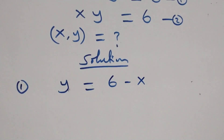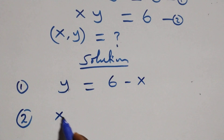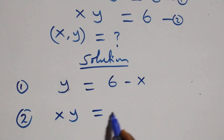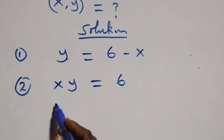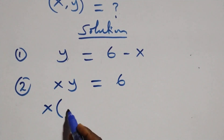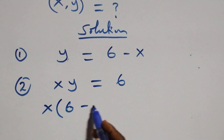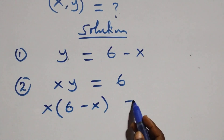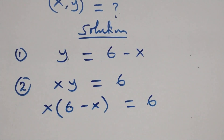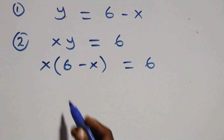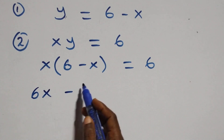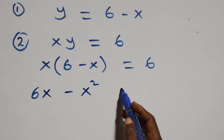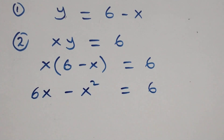From equation two, which is x times y equals six, we substitute the value of y. This becomes x times (six minus x) equals six. We open this bracket and we have six x minus x squared equals six.